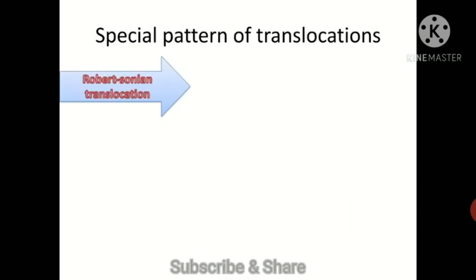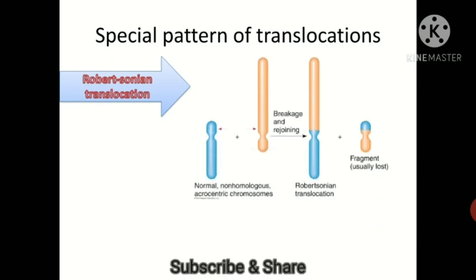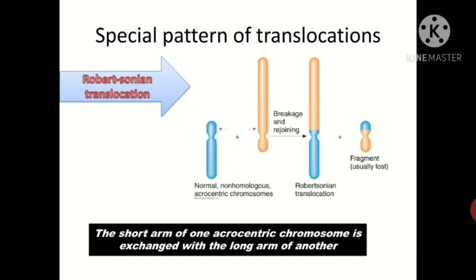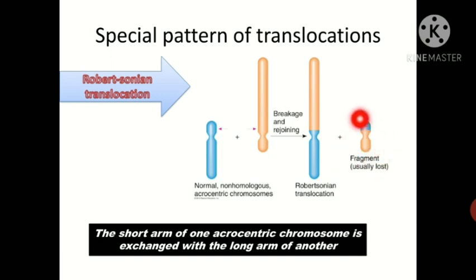A special pattern of translocation is Robertsonian translocation, where the short arm of one acrocentric chromosome is exchanged with the long arm of another. Breaks occur close to the centromere, affecting the short arms of both chromosomes. The most frequent form of Robertsonian translocation in humans occurs between chromosomes 13 and 14, and chromosomes 14 and 21.